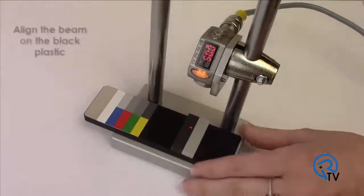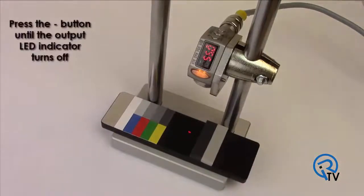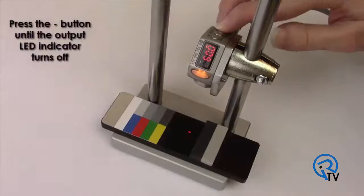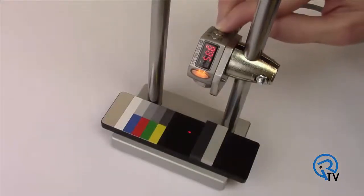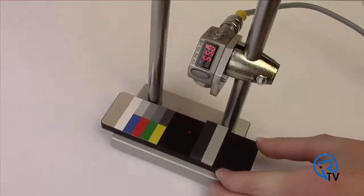Now line the beam on the black plastic. Press the minus button until the output LED indicator turns off. The sensor is now off for the base and target piece but on for the foam.